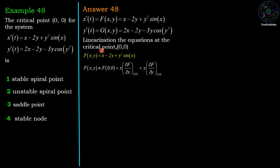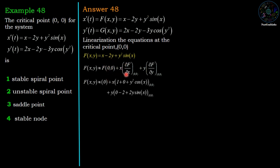We linearize the equation at the critical point (0,0). Given f(x,y) = x - 2y + y² sin(x), its approximate linear form is f(0,0) + x·(∂f/∂x) at (0,0) + y·(∂f/∂y) at (0,0). Evaluating: f(0,0) = 0, ∂f/∂x = 1 + y² cos(x) evaluated at (0,0) gives 1, and ∂f/∂y = -2 + 2y sin(x) at (0,0) gives -2. So f(x,y) ≈ x - 2y, which is the linearized approximation.